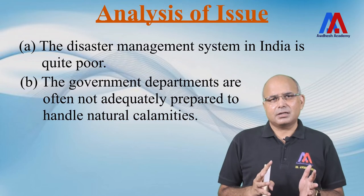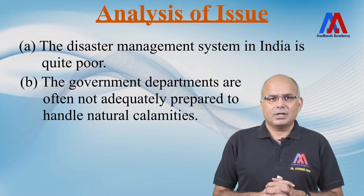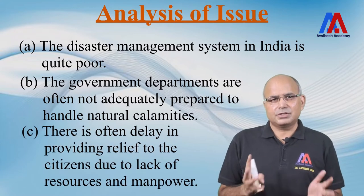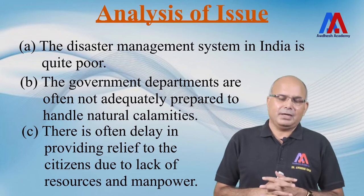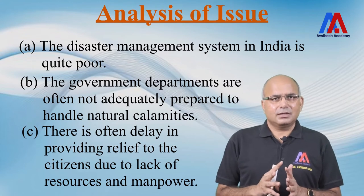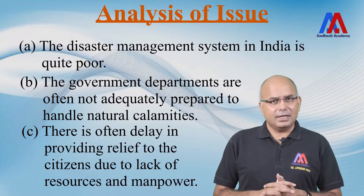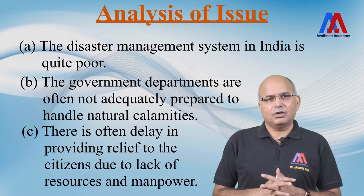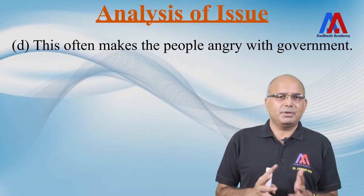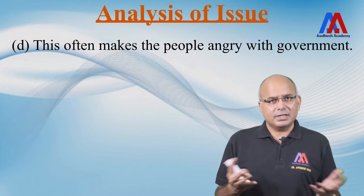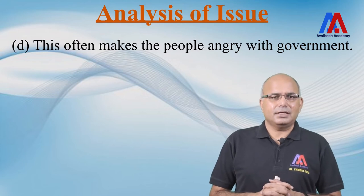Government departments are not adequately prepared to handle natural calamities. There is often a delay in providing relief material to citizens because of lack of resources and manpower. When the calamity comes, we suddenly realize how ill-prepared the government systems are. When relief material does not reach people, they get angry with the government, because India is a democracy and people expect the government to come to their rescue when they are in trouble.